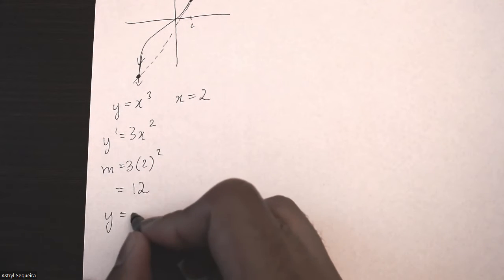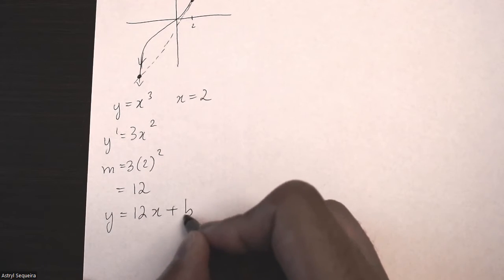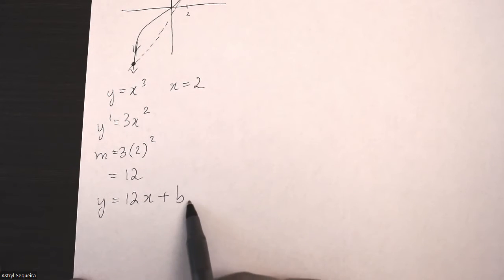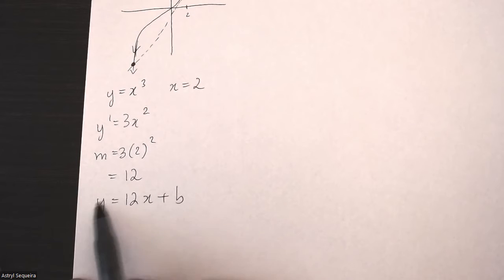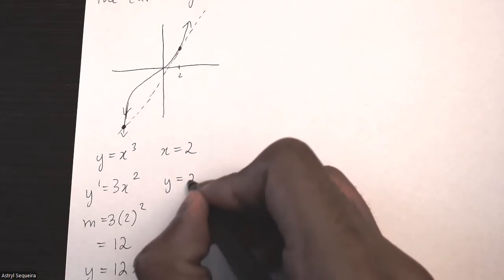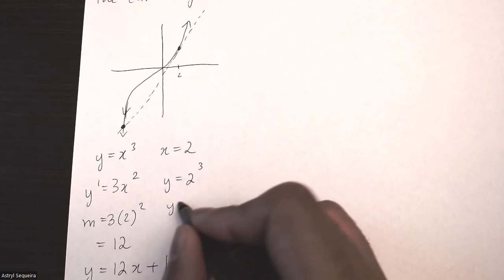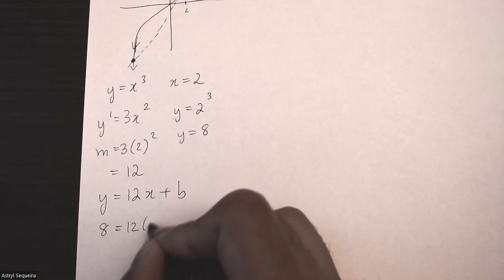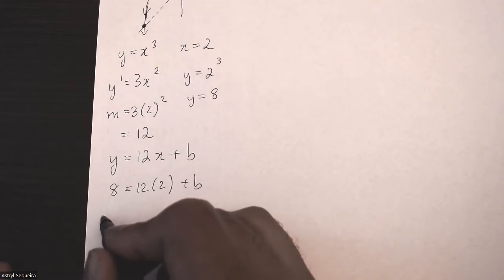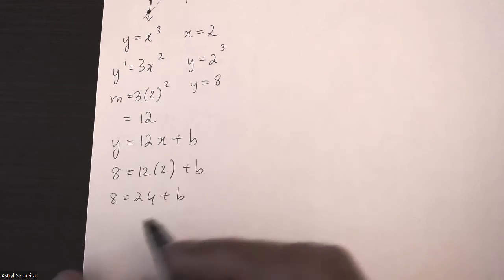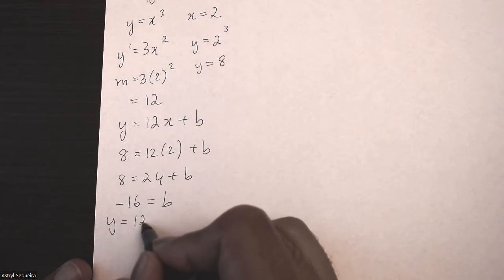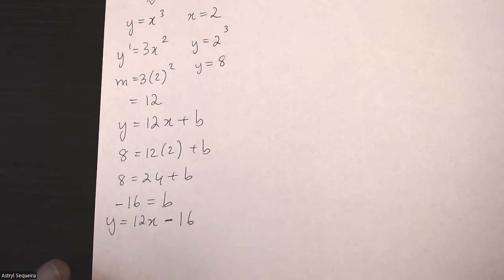My equation of the tangent line is y equals 12x plus b — slope is 12, but I don't know the y-intercept yet. To find it, I need to substitute an x and y value of a known point. With x equals 2, y equals 2 cubed which is 8. Substituting y as 8 and x as 2 and solving for b gives negative 16. So the tangent line equation is y equals 12x minus 16.